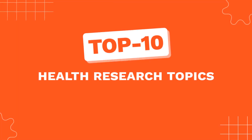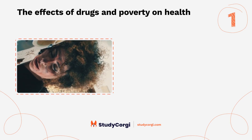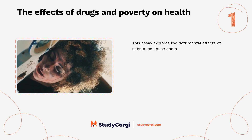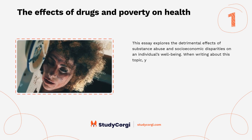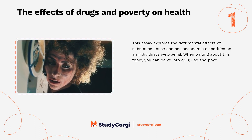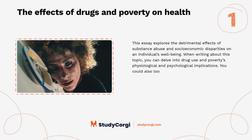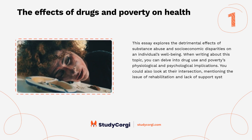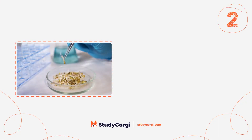Top 10 health research topics. The effects of drugs and poverty on health: this essay explores the detrimental effects of substance abuse and socioeconomic disparities on an individual's well-being. When writing about this topic, you can delve into drug use and poverty's physiological and psychological implications. You could also look at their intersection, mentioning the issue of rehabilitation and lack of support systems.